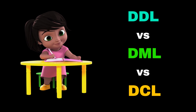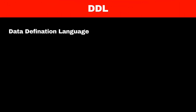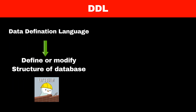Do you know the difference between DDL, DML and DCL commands in SQL? All the SQL commands are classified into three categories based on their function. The first category is DDL commands. DDL stands for Data Definition Language. As the name suggests, these are the commands used to define or modify the structure of our database.